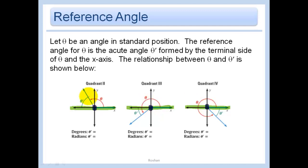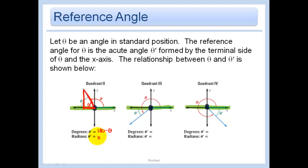Say your angle is over here in the second quadrant. Your reference angle is just this small angle between your triangle and the x-axis — we call that theta prime. If the angle they give you is theta, then theta prime is simply 180 minus theta, since you know this is 180 degrees. That's how you find this degree angle. And if you wanted to do radians, instead of 180 degrees you would use π.